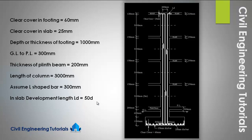In the slab, the development length LD is taken as 50D, where D is the diameter of the bar. This is the roof slab, and from the roof level, this is the extended portion of the vertical bar that is embedded with the slab reinforcement. Development length is provided to have a fixed support to the bars. So LD equals 50D.